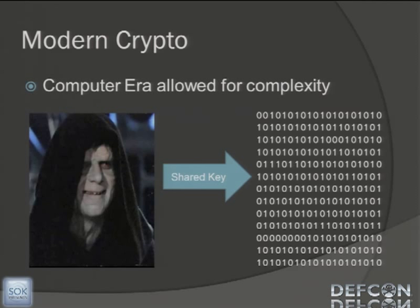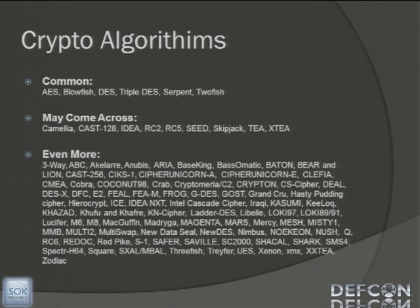The computer era allowed us to take data represented as ones and zeros and pass those through the equations we talked about earlier, and use a shared key to encrypt that data into unusable text. Now, some of the common algorithms used for this — I know this is a wall of text — but this is proof that there are thousands of different crypto types out there.